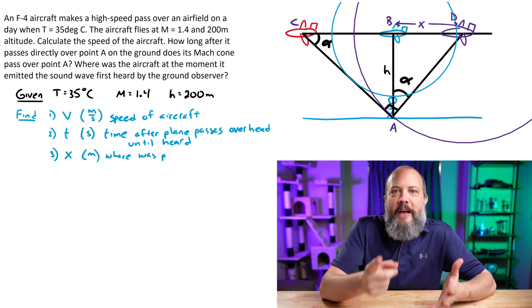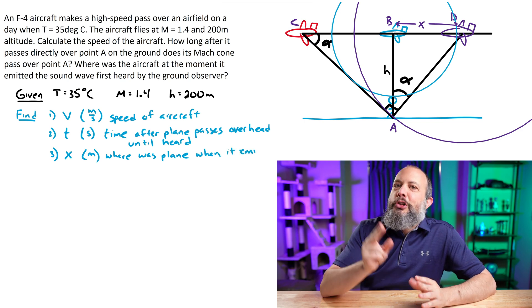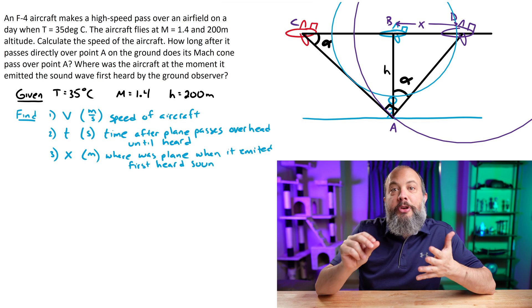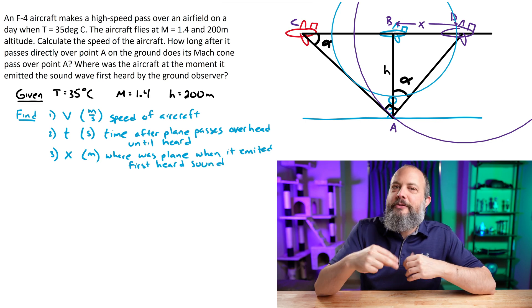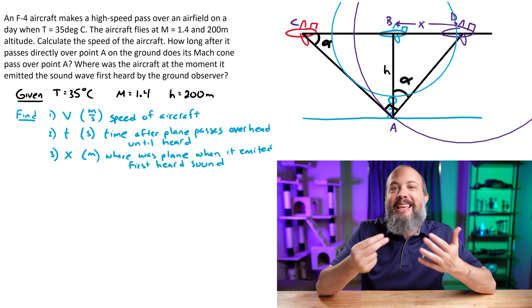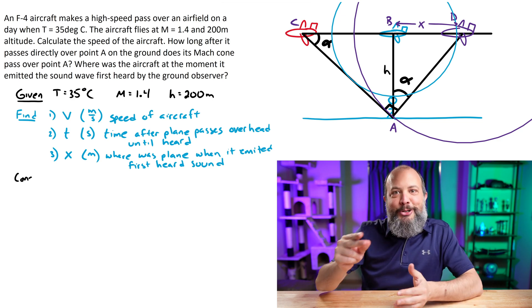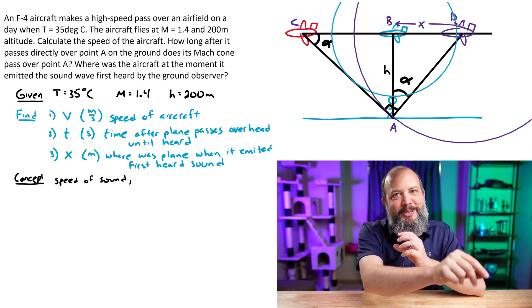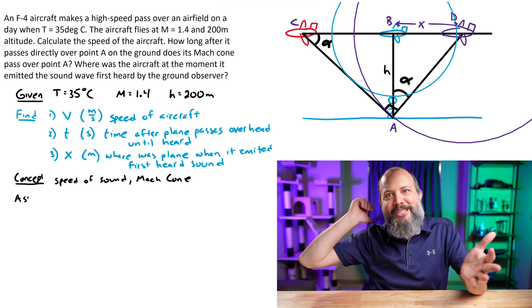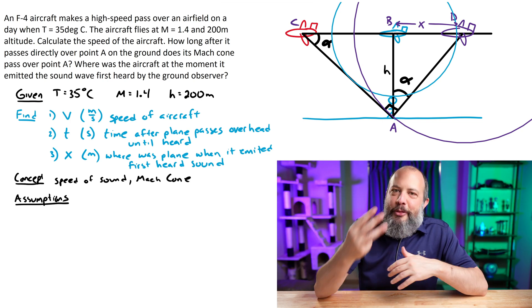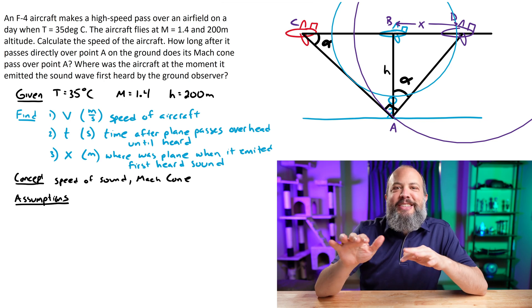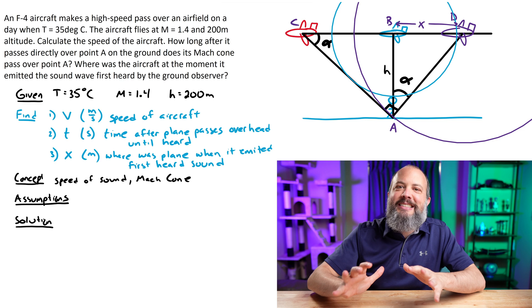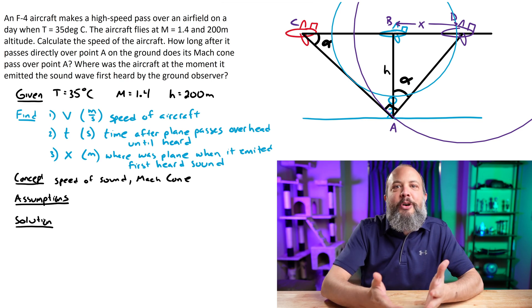We're trying to find three things. First, how fast is the plane traveling? Second, if you're looking upwards and you see the plane pass overhead, how long will you have to wait until you can actually hear the sound? The sound you hear will actually be when the plane reaches the red position, but the sound you're hearing was emitted back in the purple position. And then the third thing is that position X, how far back was it when it actually first emitted that sound that you're later hearing.